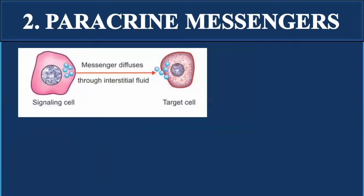The other messengers are paracrine messengers. In paracrine signaling, the signaling cell and the target cell are located near to each other. The chemical substances are released from the signaling cell into the interstitial fluid or extracellular space, and then taken up by the nearby target cells to perform specific functions.